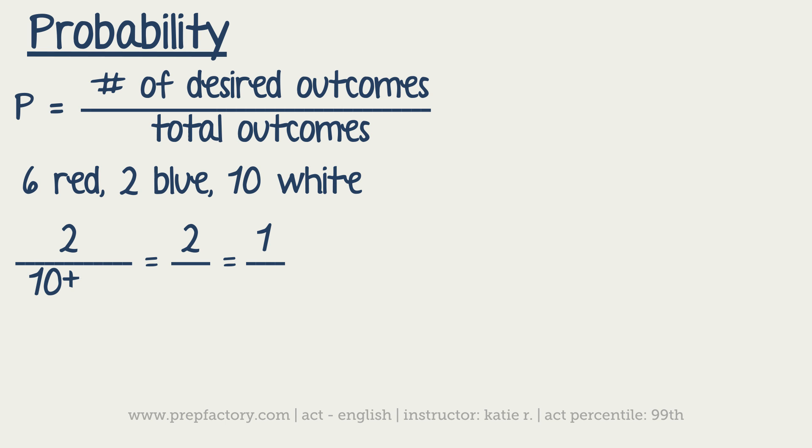Then you would take your two blue, so that's your desired, over the total. So then you would add ten plus six plus two. So you'd have two blue marbles for every eighteen total marbles, or you could say one ninth is the probability of getting the marble that you want. Okay, so that's probability.